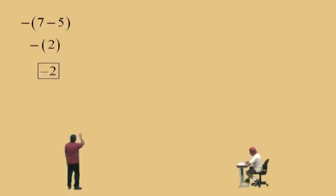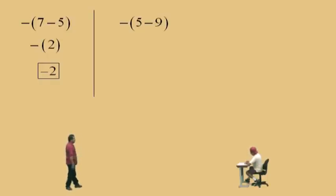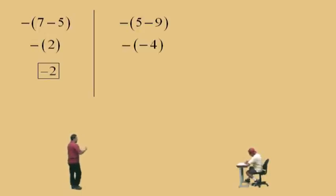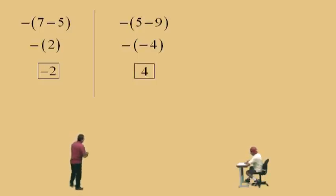Now here we have a difference with a negative sign outside, or an opposite. What's 5 subtract 9, Charlie? Negative 4. That's done in the parentheses. Bring down your opposite or negative sign. And what's the opposite of negative 4? Positive 4 — double negative. Your answer is 4.